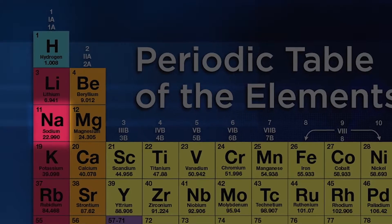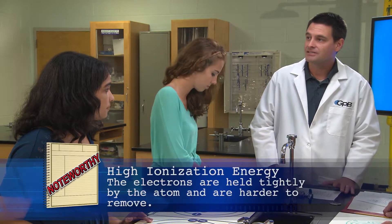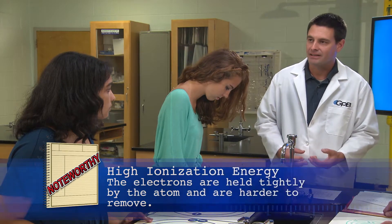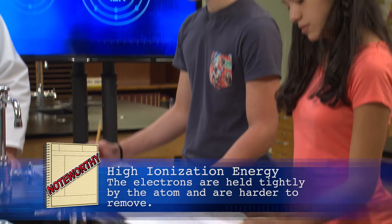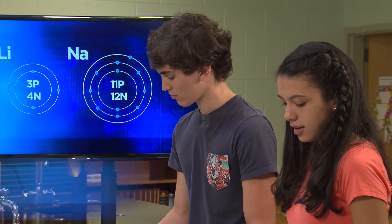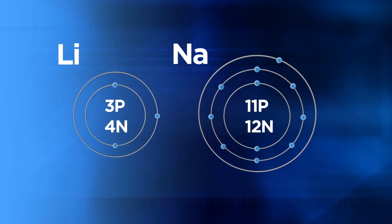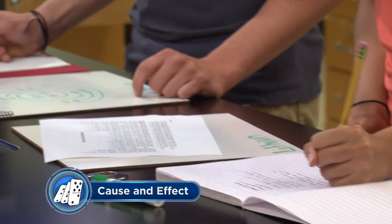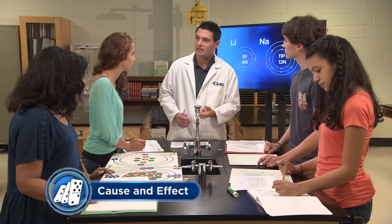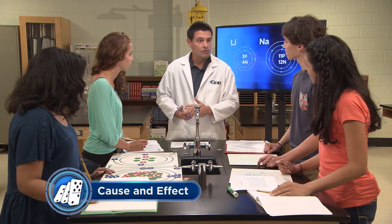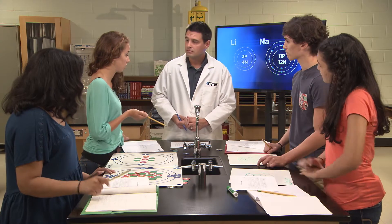Does a high ionization energy mean it's hard to remove a valence electron? That's right — a high ionization energy means that the electrons are held more tightly by the atom, and therefore it's harder to remove that electron. Sodium's valence electron is in a higher energy level than lithium's, so its electron is further away. Electrons feel less attraction when they're further away, so it'll be easier to remove the valence electron from sodium. Yes, that's right. Electrons that are farther away from the nucleus are going to have a lower ionization energy.